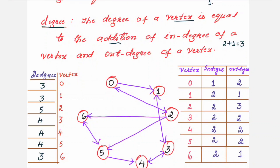Here is a practice example: find the in-degree, out-degree, and degree of each vertex for the given directed acyclic graph. The graph has six vertices: 0, 1, 2, 3, 4, 5, 6. Make a table for each vertex.